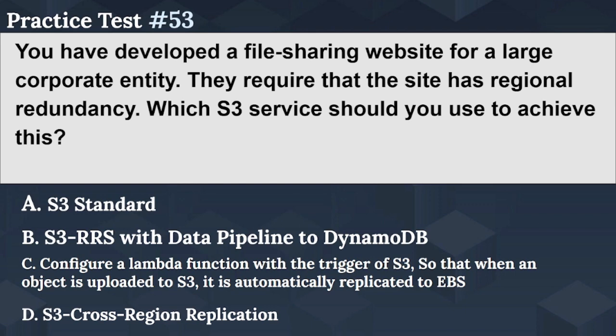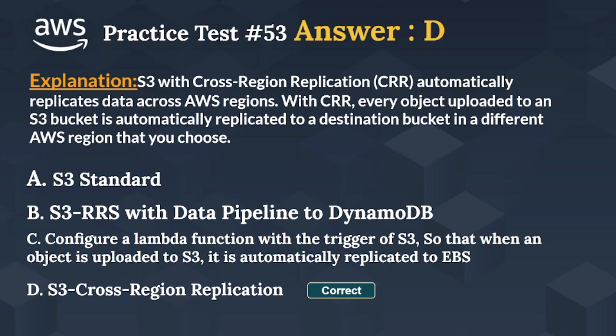Option D: S3 cross region replication. The right answer is Option D: S3 cross region replication. S3 with cross region replication (CRR) automatically replicates data across AWS regions. With CRR, every object uploaded to an S3 bucket is automatically replicated to a destination bucket in a different AWS region that you choose.